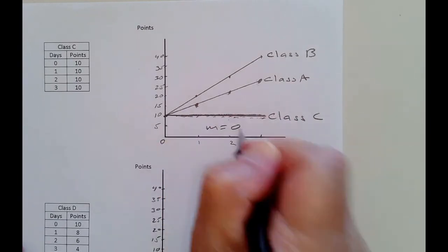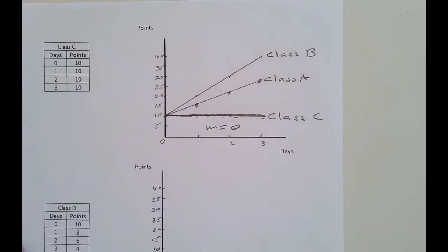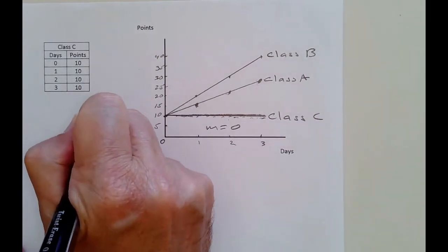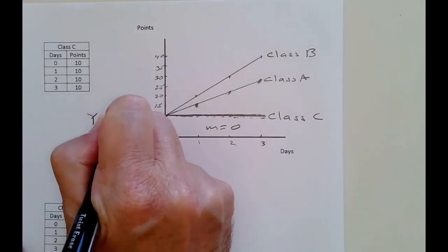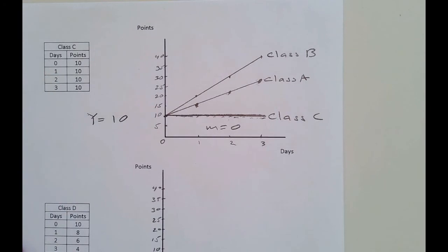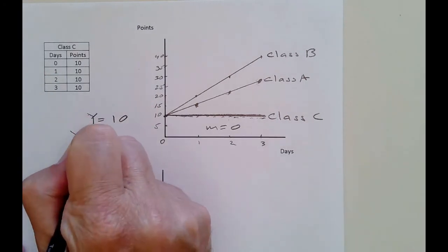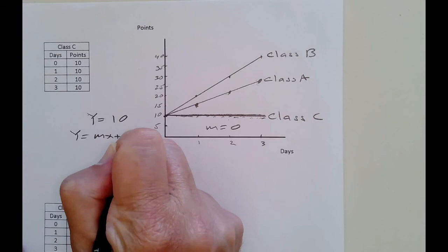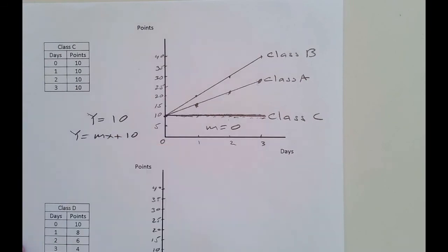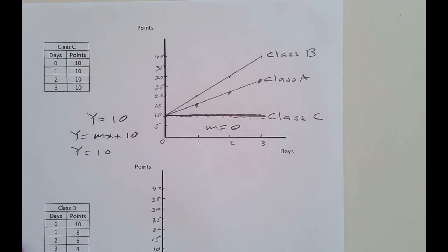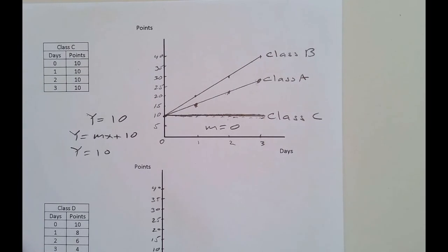Does class C have an equation? Yes. Y is equal to 10. We could write it as y equals mx plus 10, but since the slope is zero, zero times anything is zero, so it just comes out to 10. A flat line tells us that the x variable has no impact on the y variable at all.